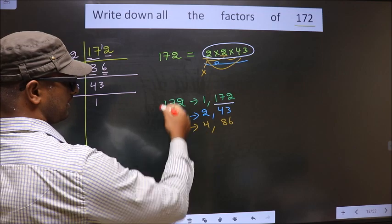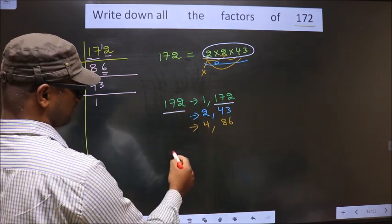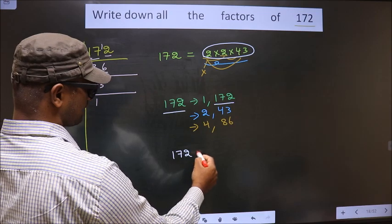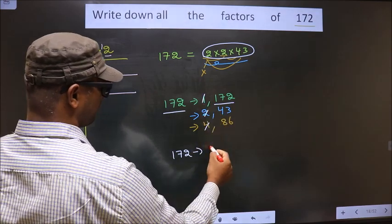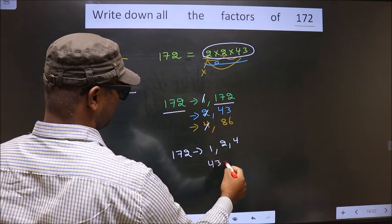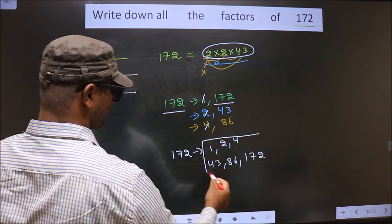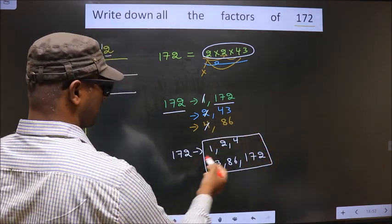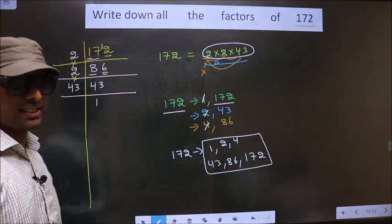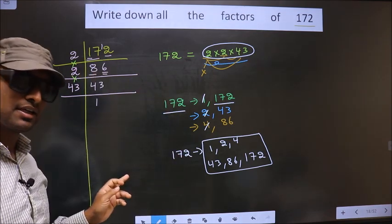So, thus, these are all the factors of 172. That is, 1, 2, 4, 43, 86, 172. These are all the factors of 172. Am I clear?